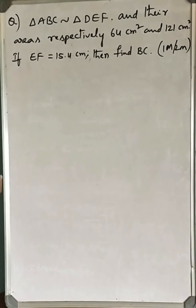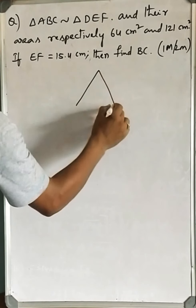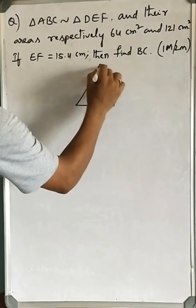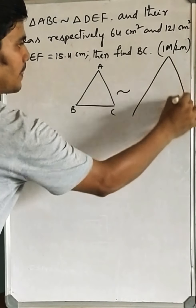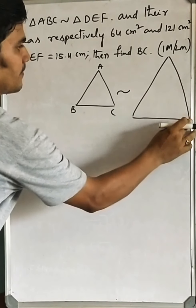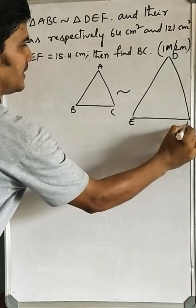To understand better, let me draw the diagram first. Let it be triangle ABC, which is similar to triangle DEF.